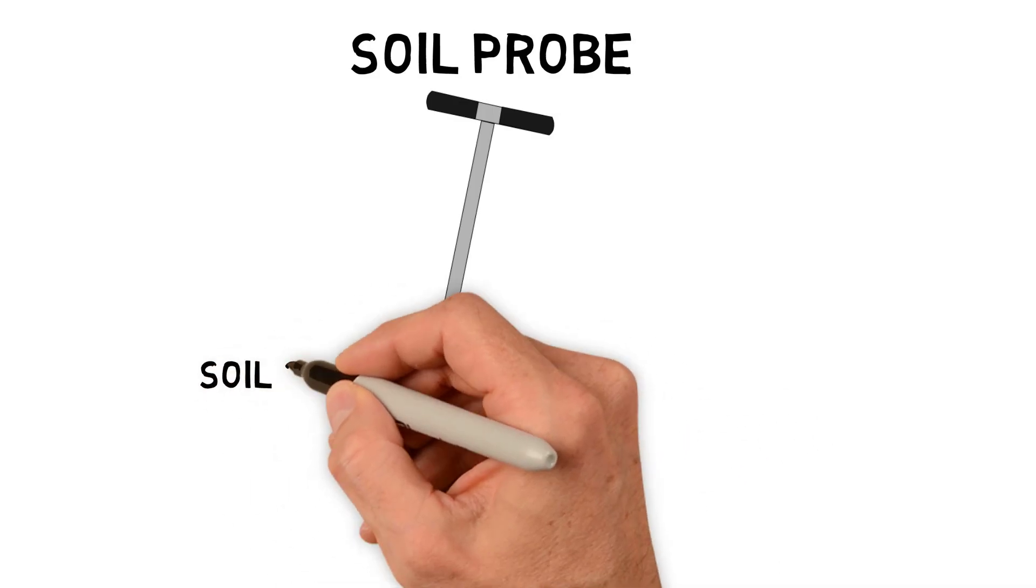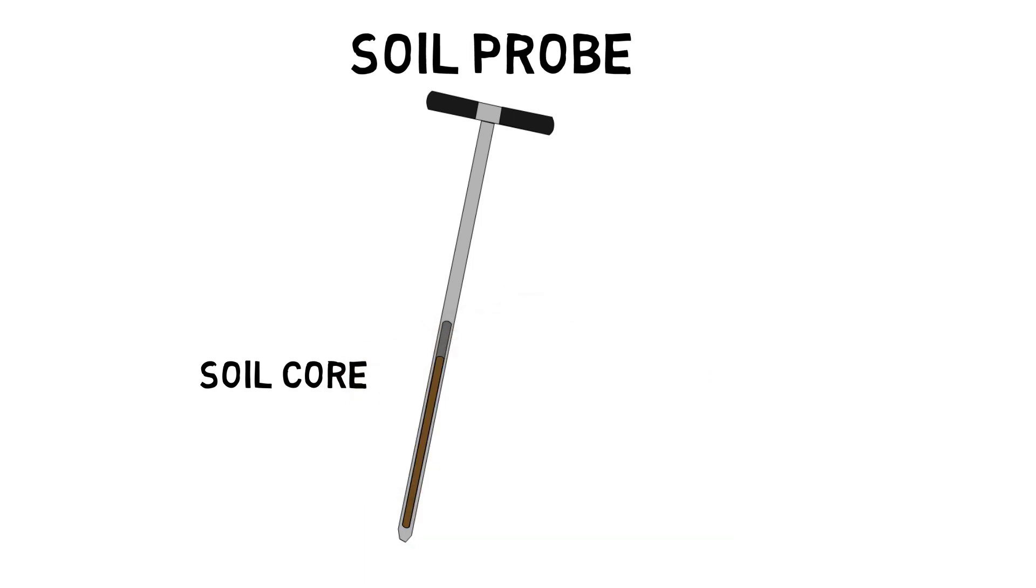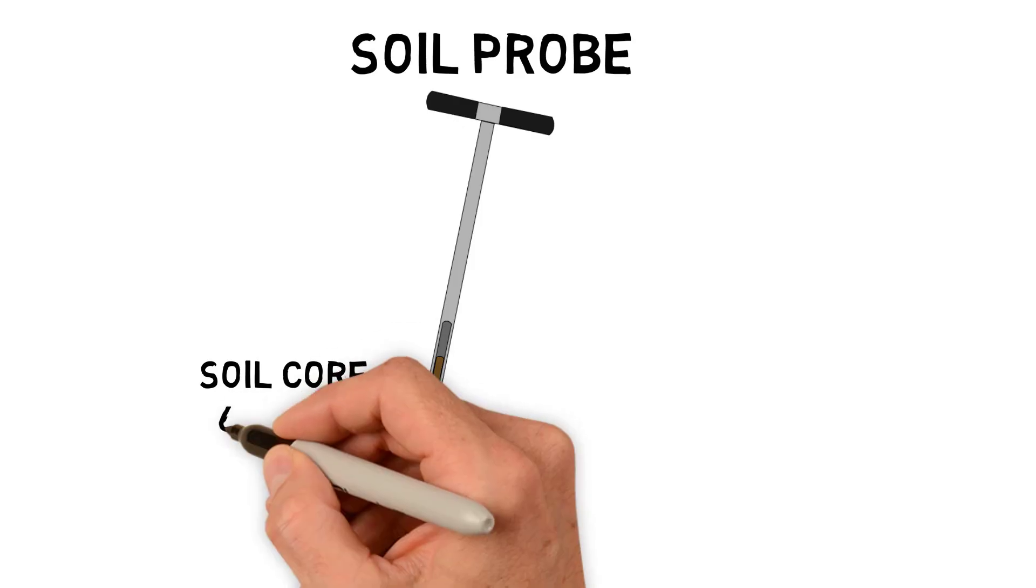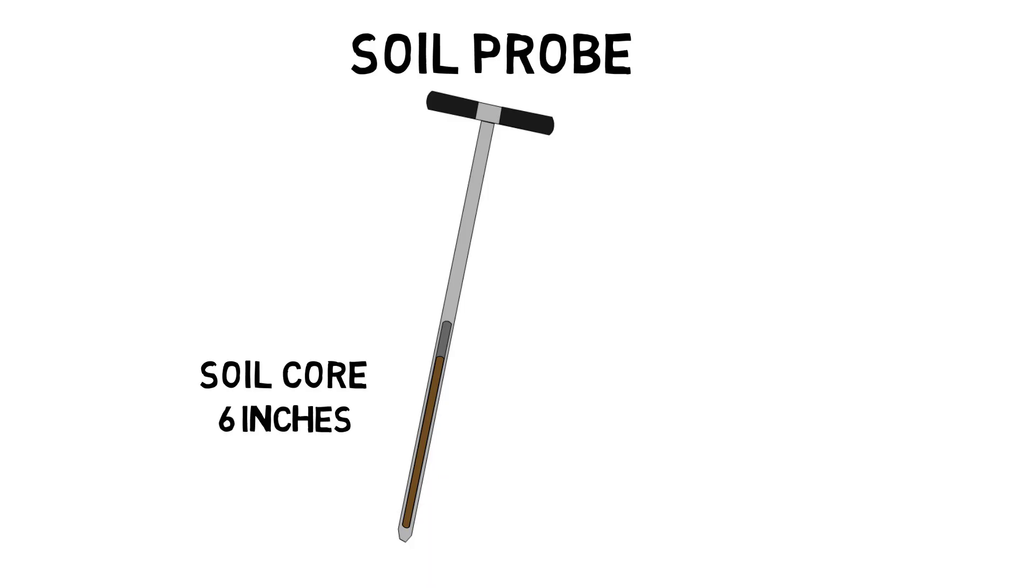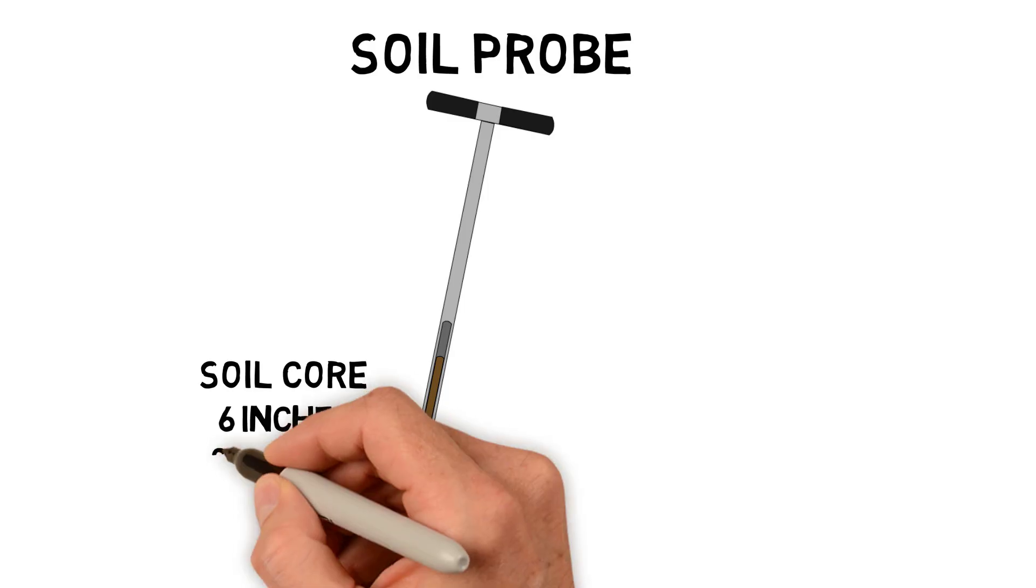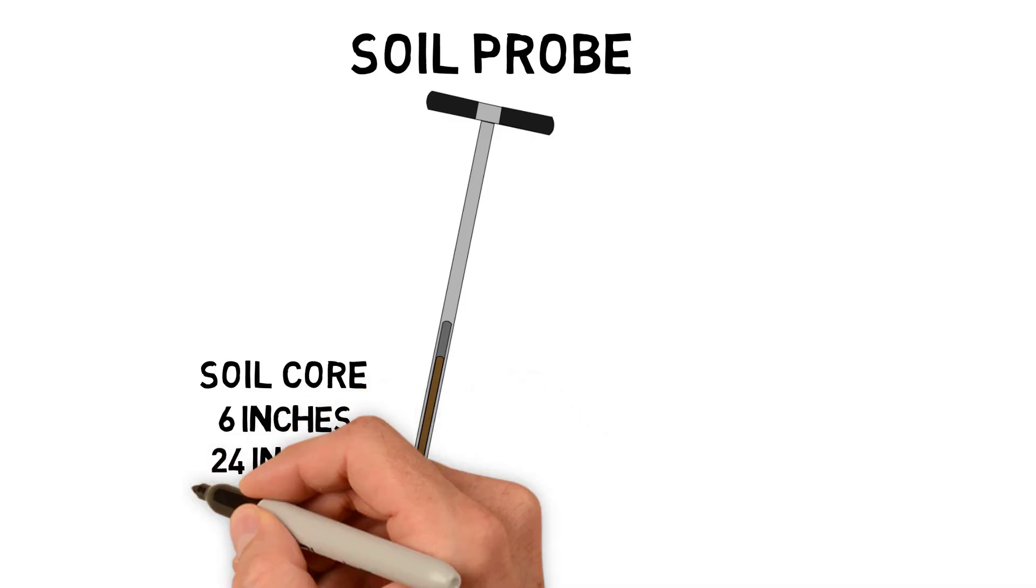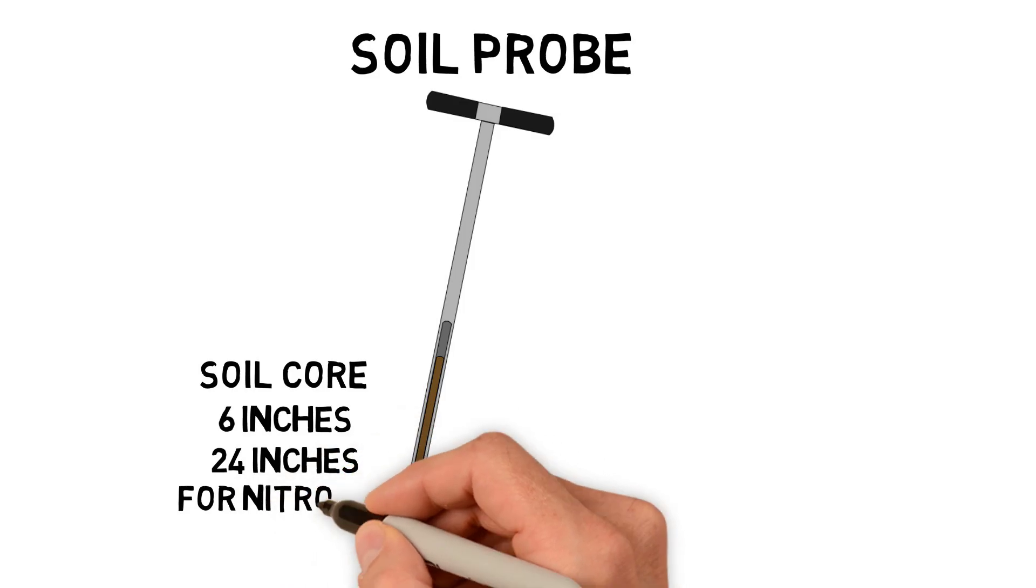The soil that enters the bucket of the probe is called a soil core. The depth you need to sample to depends on the nutrient they're looking for and also the lab that's going to be processing these samples. Most of the time, a 6-inch sample is sufficient. However, if you're sampling for a farming operation, a lot of times you'll need to sample down to 24 inches because you'll be looking for nitrogen, which is a mobile nutrient and can be found deeper in the soil profile.